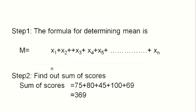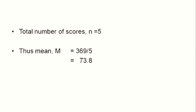Step 1: the formula for determining mean is mean = (x1 + x2 + x3 + ... + xn) / n. Step 2: find the sum of scores. In this case, sum of scores = 75 + 80 + 45 + 100 + 69 = 369. Total number of scores, n = 5. Thus, applying the formula, mean = 369 / 5 = 73.80.